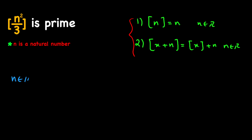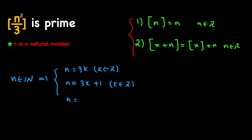Notice that n is a natural number, and any natural number can be expressed in one of three forms: either 3k, or 3k plus 1, or 3k plus 2, where k is an integer. We have three scenarios for n, and we're going to use them to solve our problem. The reason I used three is because we have three in the denominator of our fraction.